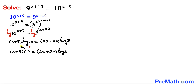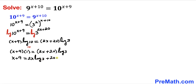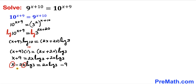Now let's go ahead and distribute on both sides. The left hand side gives us x+9, and when we distribute on the right hand side we get 2x·log(3) + 20·log(3). Now let's move the 2x·log(3) term to the left hand side and move 9 to the right hand side. We can see that x is common between the first two terms, so we factor out x and get x·(1 − 2·log(3)) = 20·log(3) − 9.